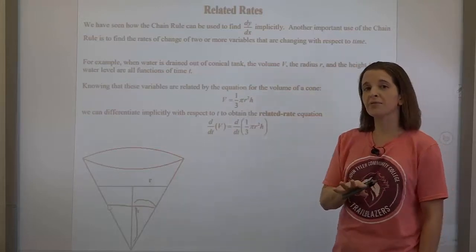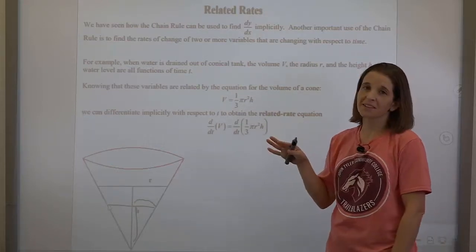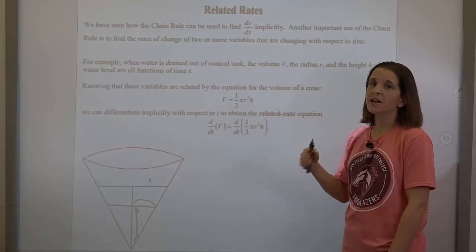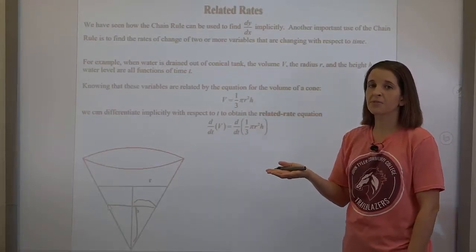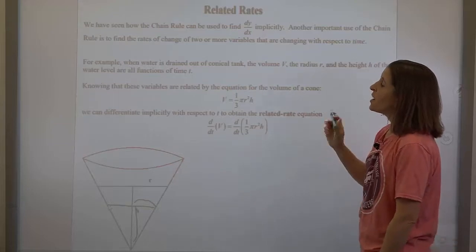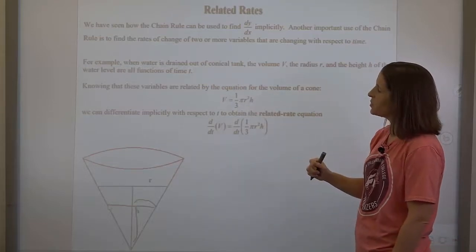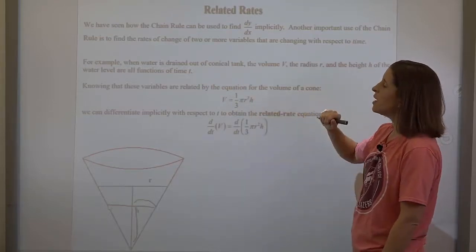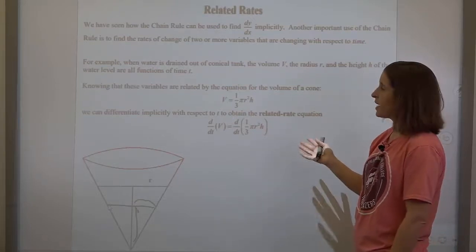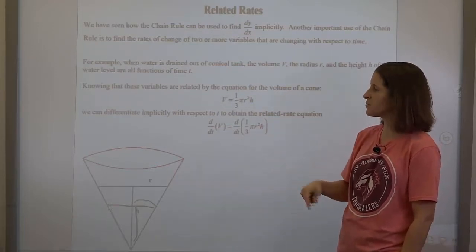I don't want you stressing about formulas unless it's something really easy like the area of a circle or the Pythagorean theorem. If it's anything more complicated, I will provide it for you. For instance, the volume of a cone is one-third pi r squared h. If you have a homework problem with a more complicated formula not provided, you're welcome to ask Google, because I will give it to you on the test.